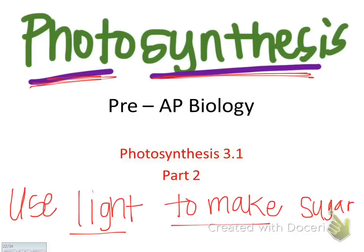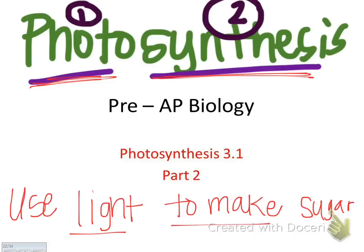Photosynthesis is broken up into two parts. The light reaction is the first part, and the Calvin cycle, where you make sugar, is the second part. Today's lecture, which is photosynthesis part two, is all about the light reaction — the first part of photosynthesis.